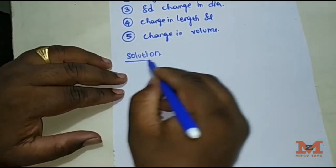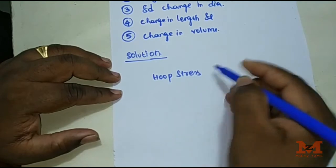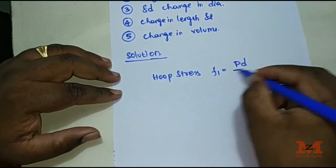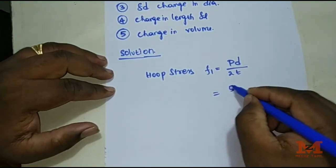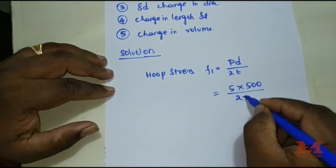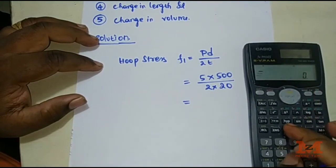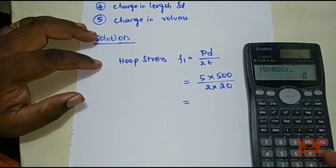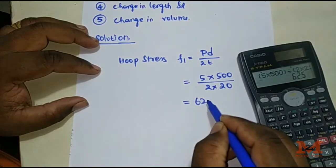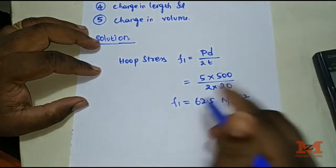First, calculate the circumferential stress (hoop stress). Formula: σ₁ = PD / 2T = (5 × 500) / (2 × 20) = 2500 / 40 = 62.5 N/mm².